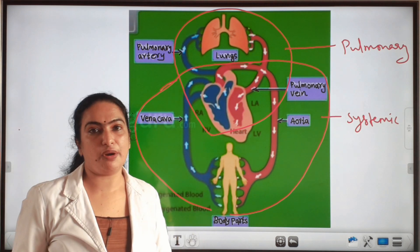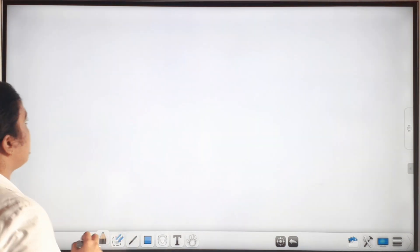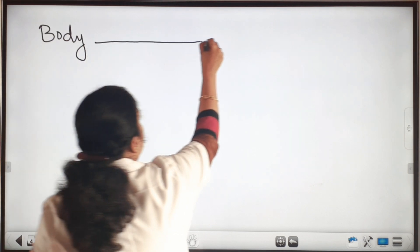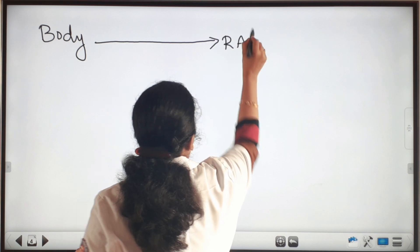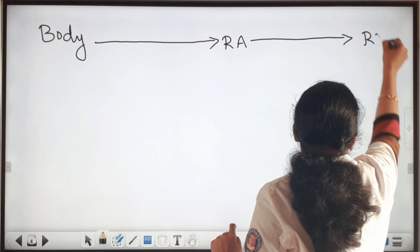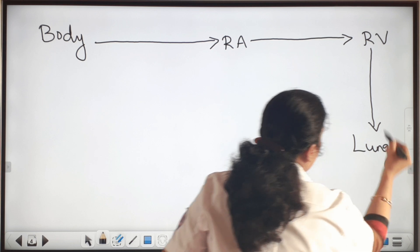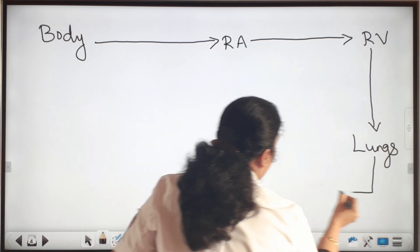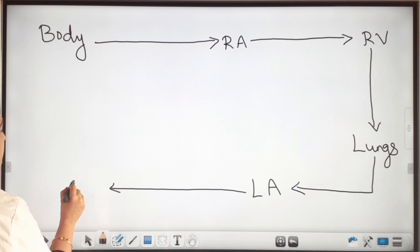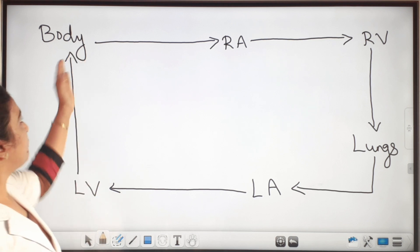Now I will show you a flow chart of the circulation. From the body, the blood enters into the right atrium first. Then from the right atrium, the blood enters into the right ventricle. From the right ventricle, the blood enters into the lungs. From the lungs, the blood pumps into the left atrium. From the left atrium, the blood pumps into the left ventricle, and from the left ventricle the blood pumps back to the body.